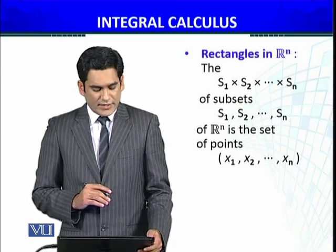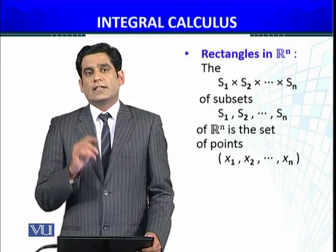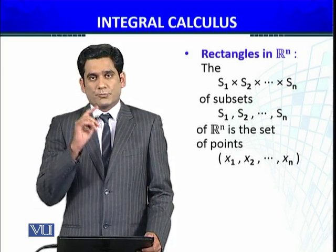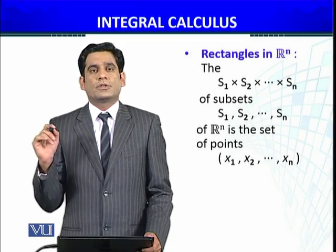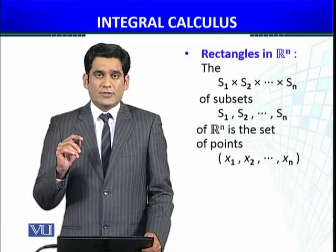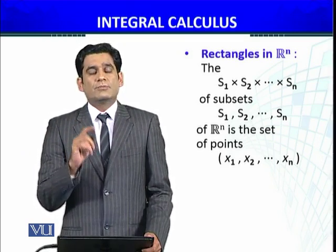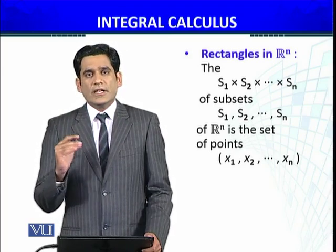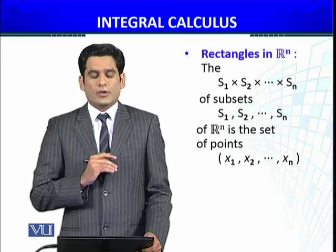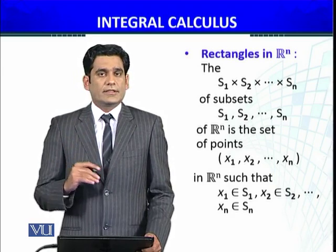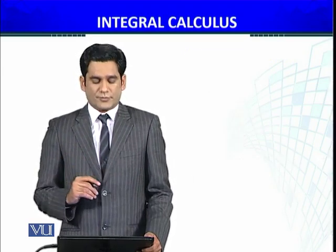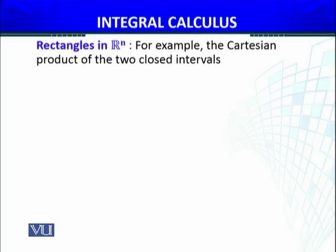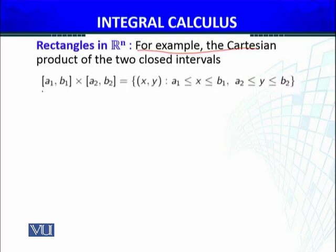Now that we have defined the rectangle, a point (X1, X2, X3, …, Xn) belonging to the rectangle means X1 belongs to S1, X2 belongs to S2, and so on, with Xn belonging to Sn. Let me give an example: the Cartesian product of two closed intervals defines a rectangle in R2.